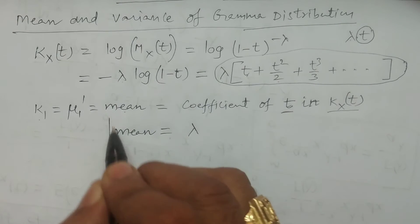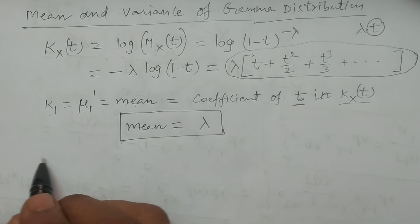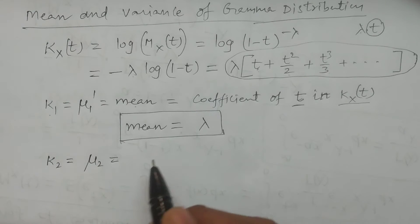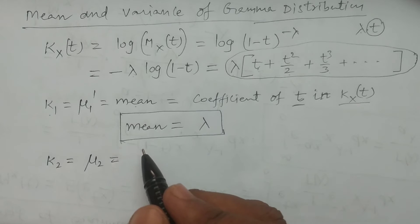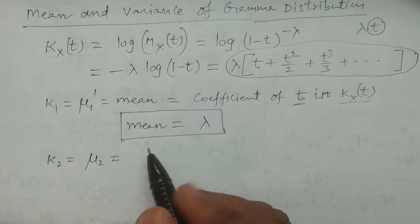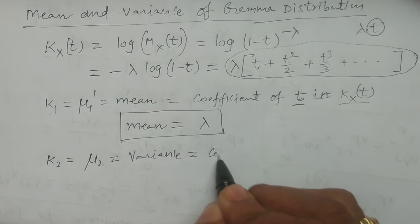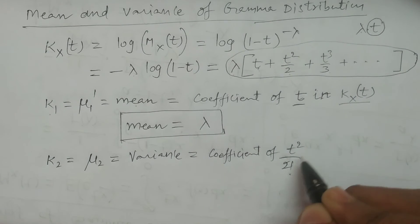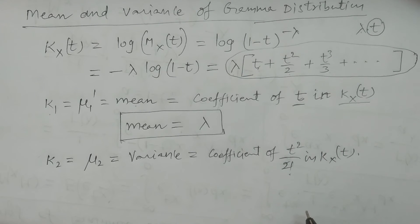So mean equals lambda for the gamma distribution. Next, we calculate k₂, the second cumulant, which is the variance by the definition and properties of cumulants. The second cumulant k₂ is variance, that is μ₂. It is the coefficient of t² / 2! in k(x,t).